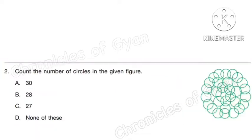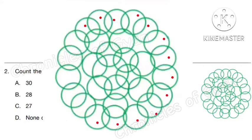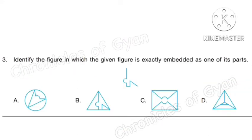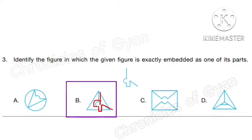Question 2. Count the number of circles in the given figure. In the outer circle there are 18 circles, and in the inner part there are 12. So 18 plus 12, we get option A: 30. Question 3. Identify the figure in which the given figure is exactly embedded as one of its parts. The correct answer is option B.